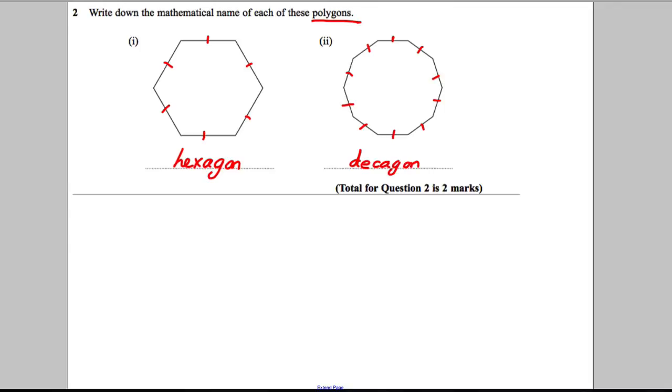Okay, now what I'm going to do is draw a quick table for you of all the shapes you need to know their names of and how many sides they've got, so you can learn all of them in case other ones come up. So we've got the number of sides and the name.